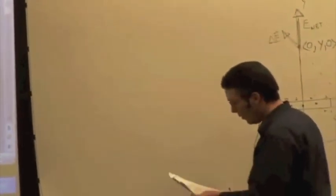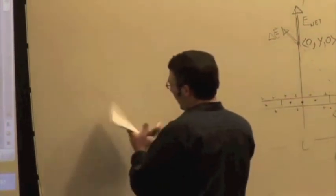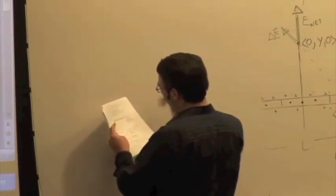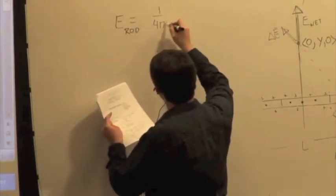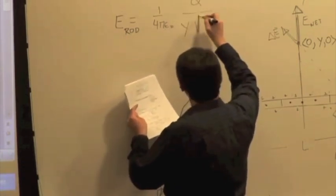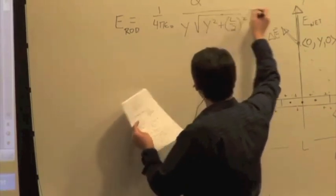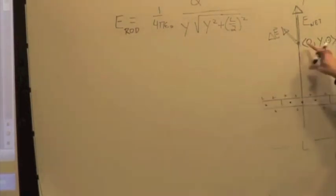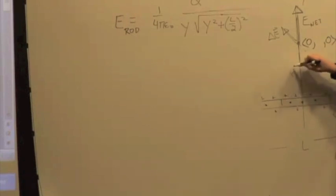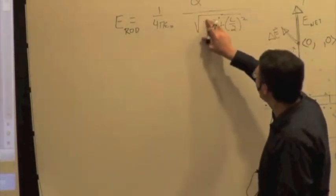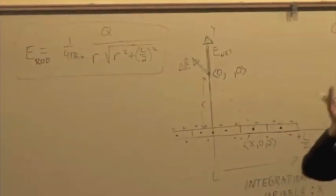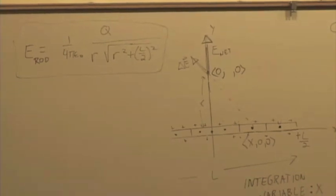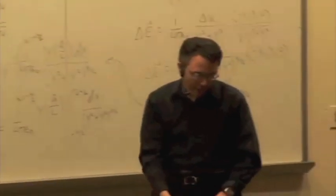The result is that the electric field due to this charge rod is one over four pi epsilon zero, times Q over y times the square root of (y squared plus (L over 2) squared). That's the general result. Since this is just the y component, we can call this distance variable r instead. So this is a formula for the magnitude of the electric field due to a charged rod along the center axis. It will work any time we want to find the electric field of a rod along the axis. There's an approximation we'll talk about next time.